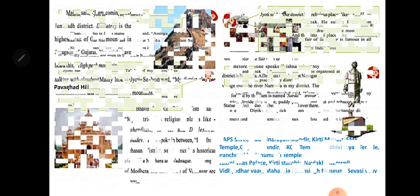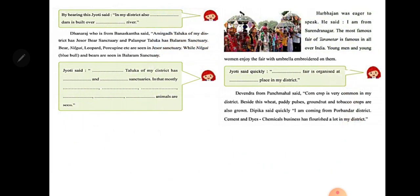By hearing this, Jyoti said: in my district Vadodara also, the Dhrot check dam, which was built on the Mahi River, is present. It is a check dam, not a full dam.